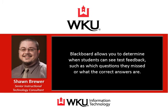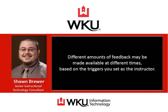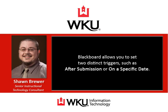Blackboard allows you to determine when students can see test feedback, such as which questions they missed or what the correct answers are. Rules governing feedback can be created while deploying a test or can be added later. Different amounts of feedback may be made available at different times based on the triggers you set as the instructor. Blackboard allows you to set two distinct triggers, such as after submission or on a specific date.